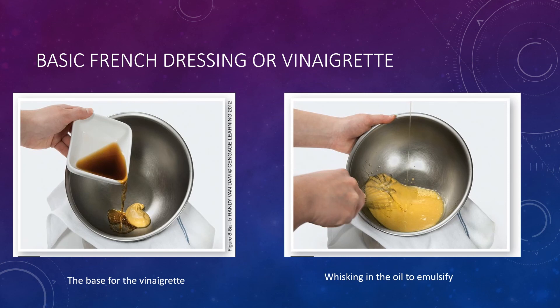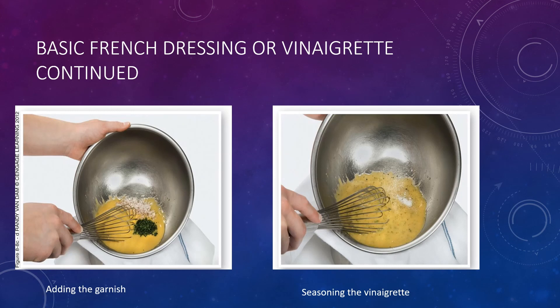A basic French dressing or vinaigrette. In its most basic form, this dressing is also referred to as a vinaigrette. Of the three primary cold dressings, basic French is the least complicated. Its ingredients consist of oil and vinegar in a ratio of three parts oil to one part vinegar. The seasonings are also uncomplicated, including only salt and pepper. The emulsion created by rapid blending of the oil and vinegar is only temporary and must be quickly reworked before use. In the next slide, we add the garnish, and then season the vinaigrette once again with salt and pepper.